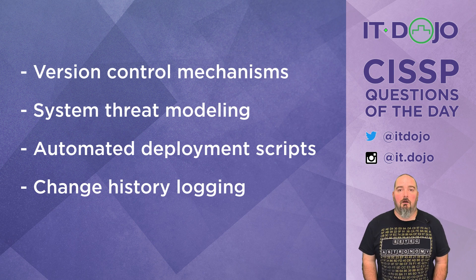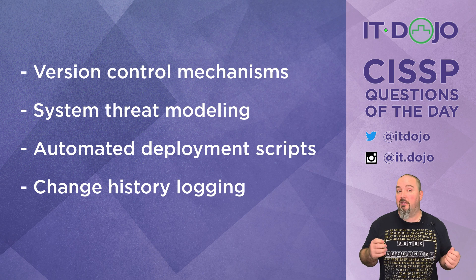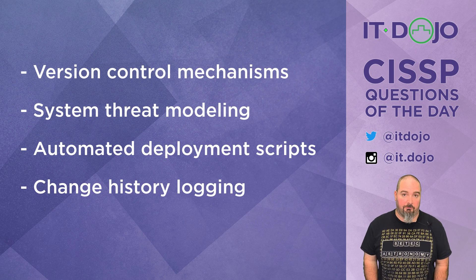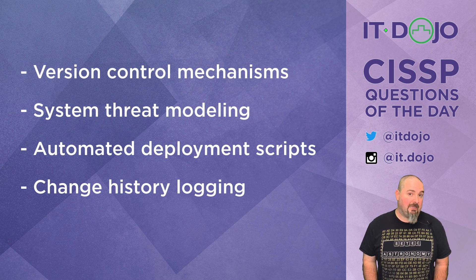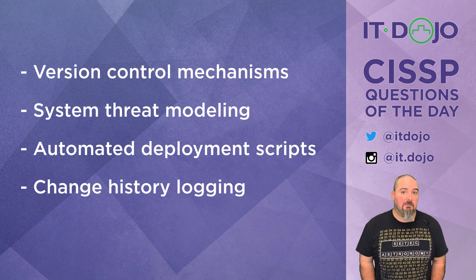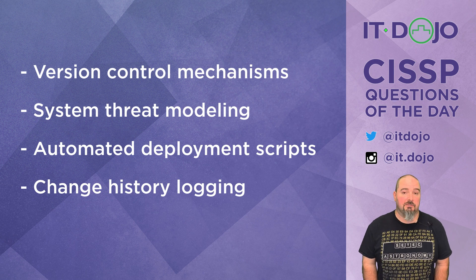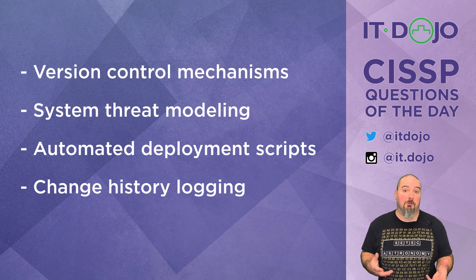Configuration management systems are pieces of software that help you make sure that certain things are deployed on systems, that they are a particular version, and that if they are changed, you can revert them back and keep records of everything being done. Some of the really popular configuration management systems today are things like Ansible, Chef, or Puppet — incredibly powerful tools you can add to your enterprise to control how configurations are deployed. They can also integrate with tools like Splunk to give you richer reporting on what's going on.